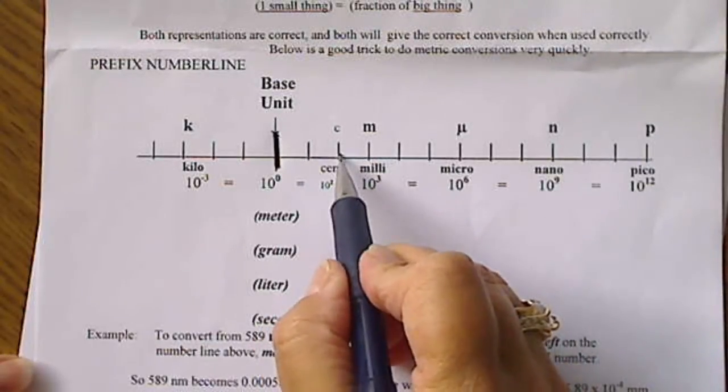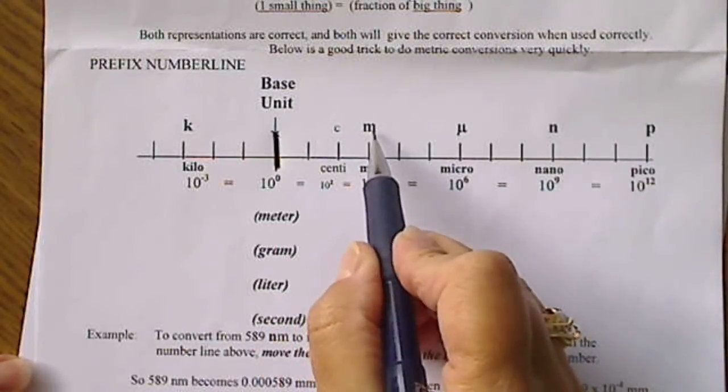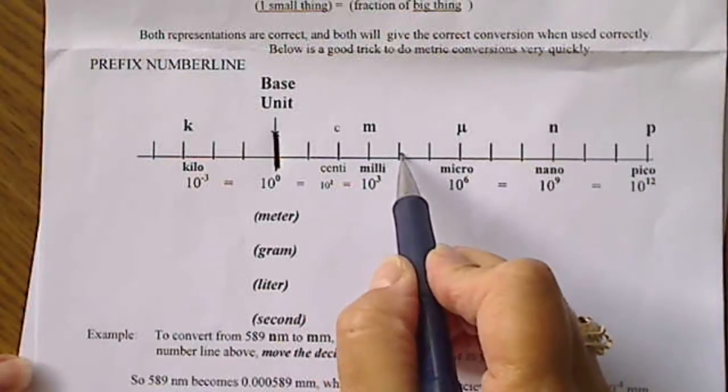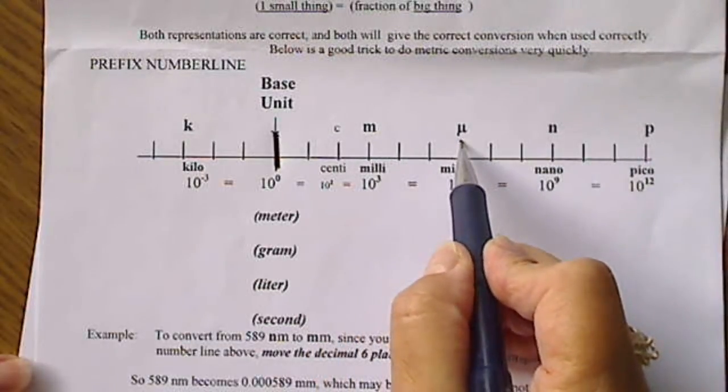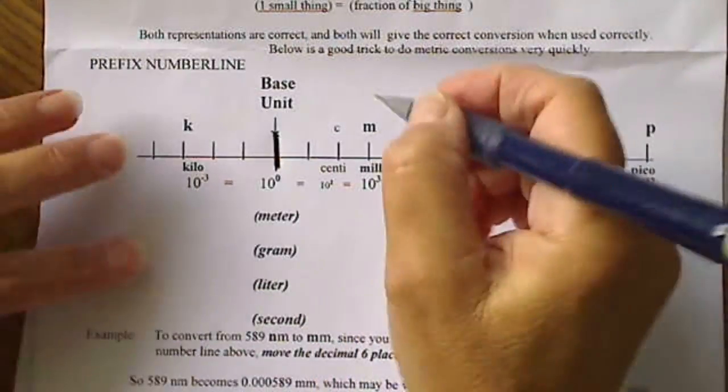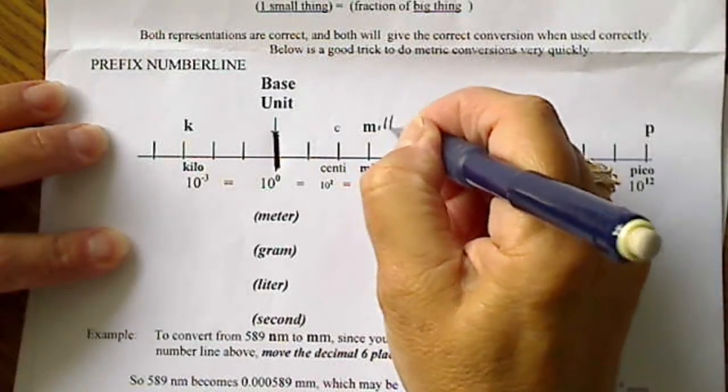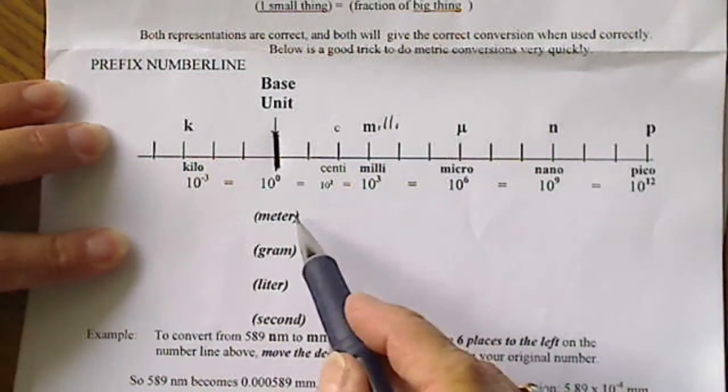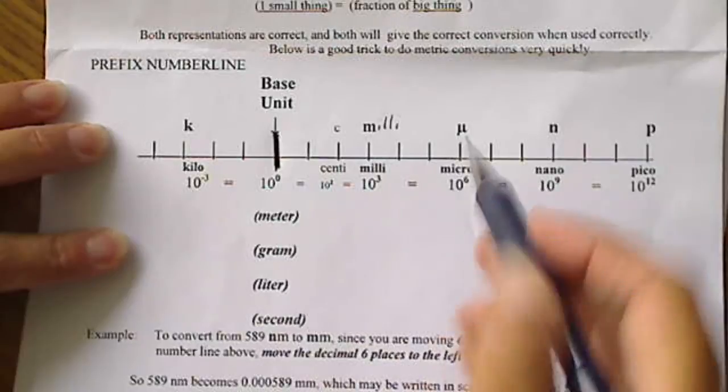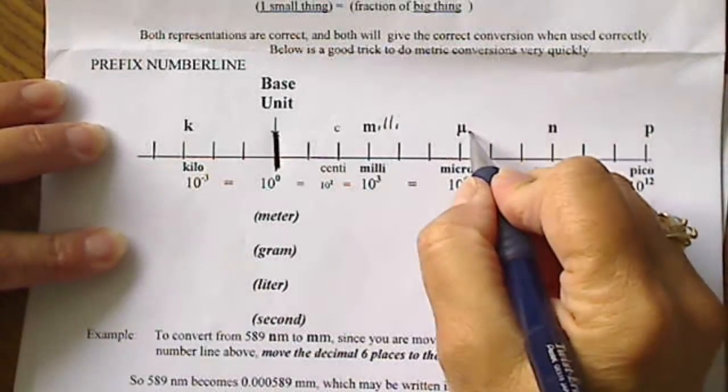And then three places to the right, we're going to write milli, and then three more places to the right, micro, nano, and pico. So this prefix stands for milli, like millimeter or milligram. This is a Greek letter M, micro.